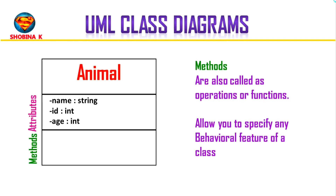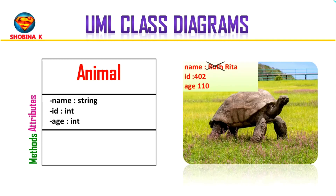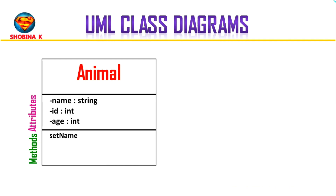Now we have some attributes for our animal class. Moving to the bottom section, this is where you put methods, which are also known as operations or functions. Methods allow you to specify any behavioral features of a class. So what are the different behaviors of this animal class? Suppose we want to change the name of our animal — like Ruth could be called Rita. So let's create a function called setName. We would also create a method for eating since all our animals eat. Methods also need to be formatted in a certain way, starting with visibility.